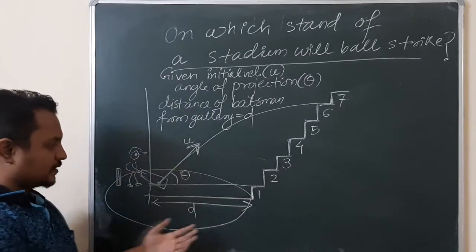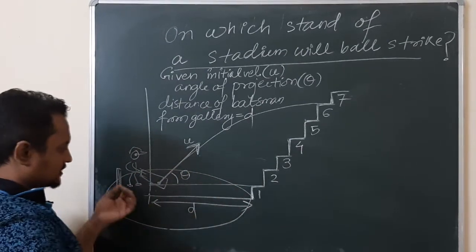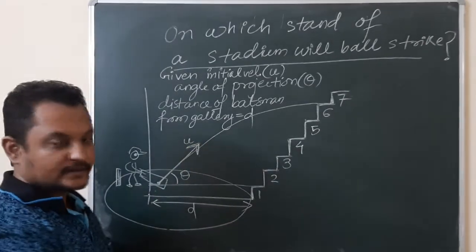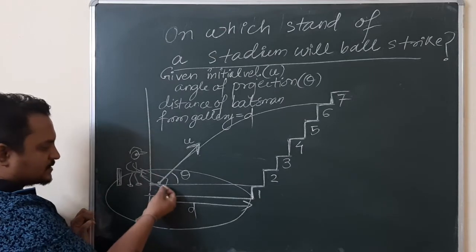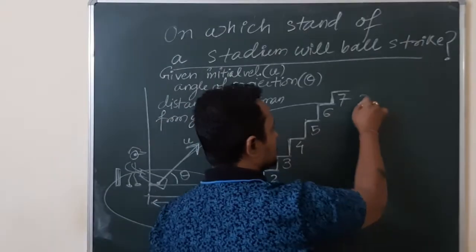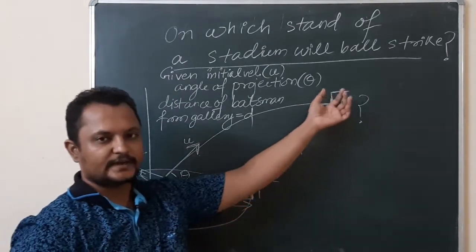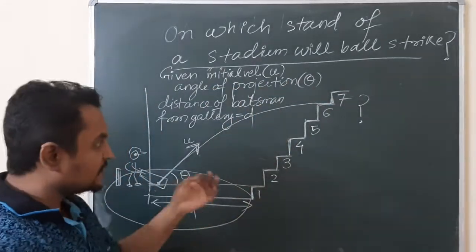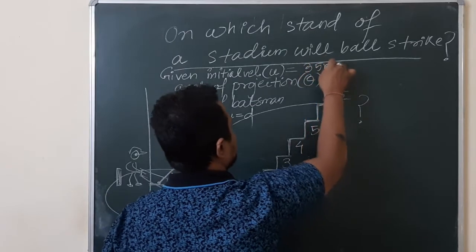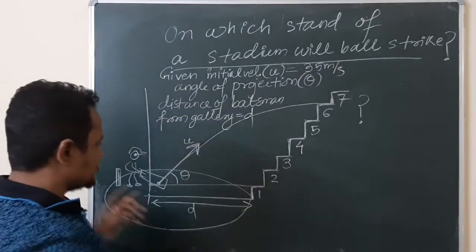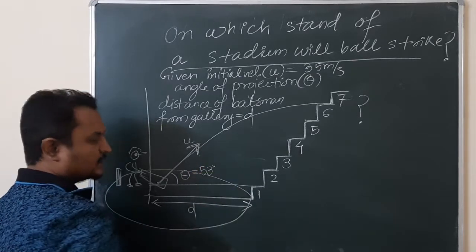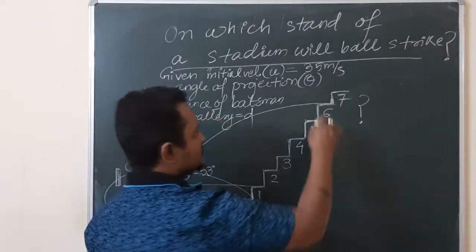Suppose this is the cricket ground. On this ground there is a batsman hitting the ball for a six — suppose it is Virendra Sehwag, one of the biggest six-hitters in cricket history. He is hitting a six and you have to find out on which stand of the gallery the ball will land. The only thing given is the initial velocity — let us assume 35 meters per second — and the angle of projection, say 53 degrees. That does not matter; we are just taking an example.